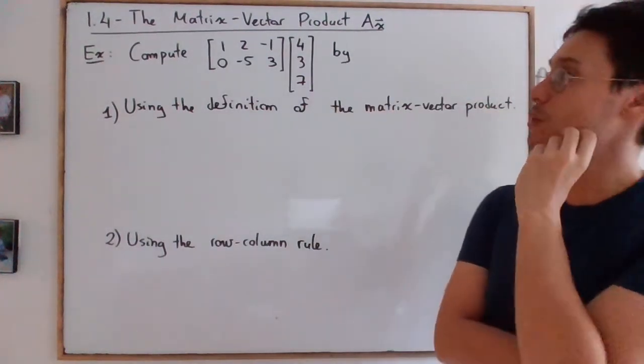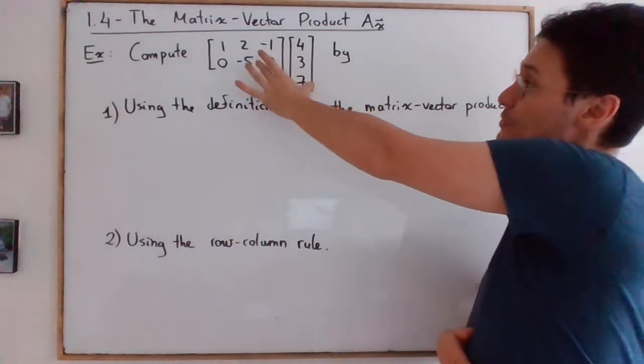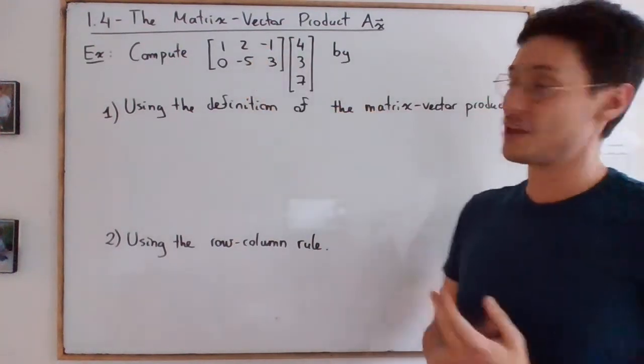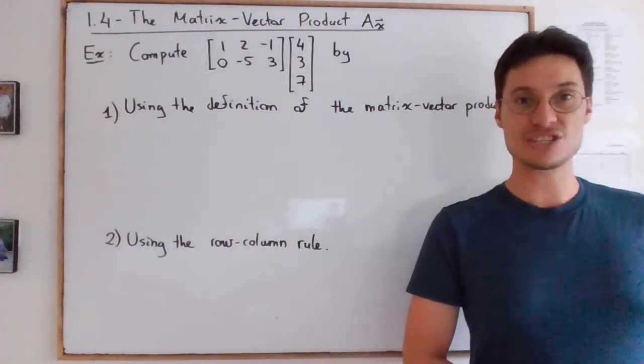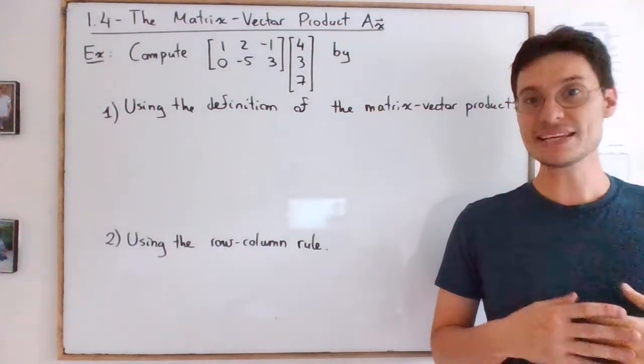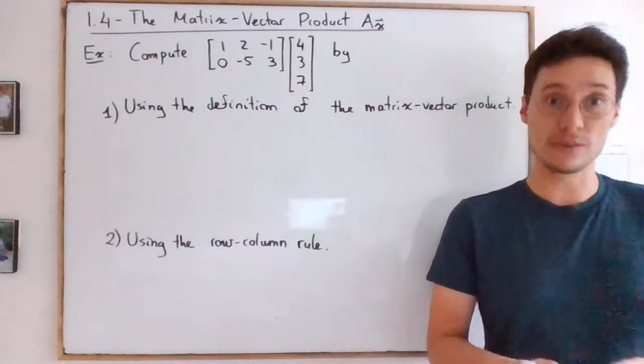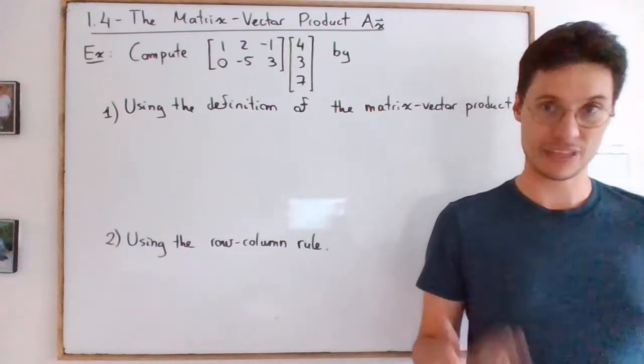What I want to do is compute the matrix vector product first using the definition and second using the row column rule that we saw in the last video.